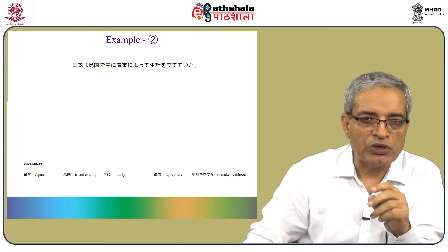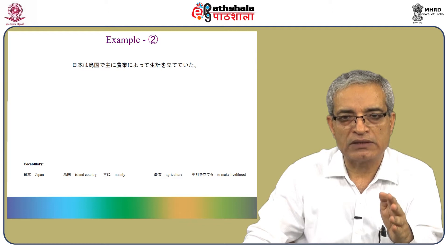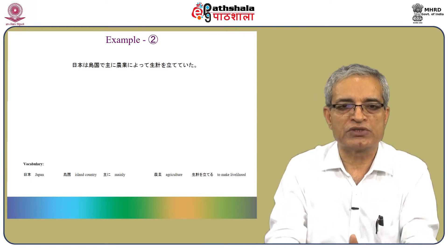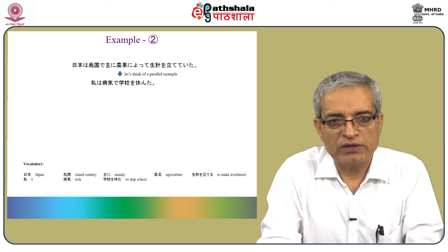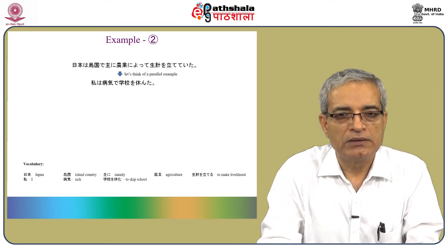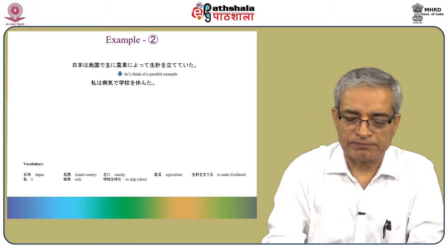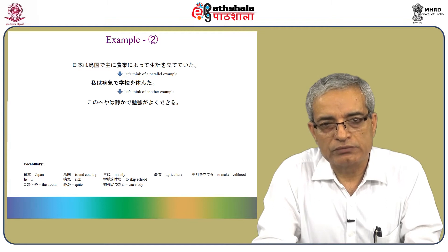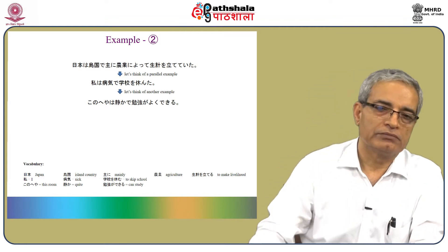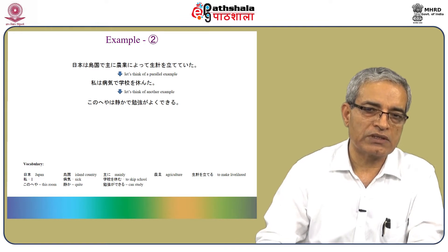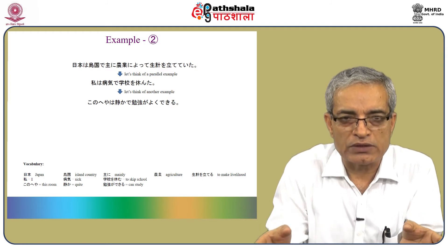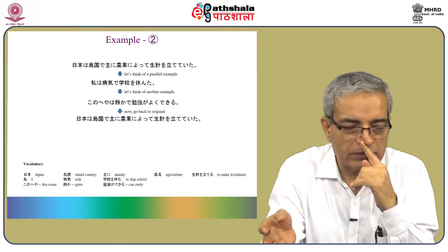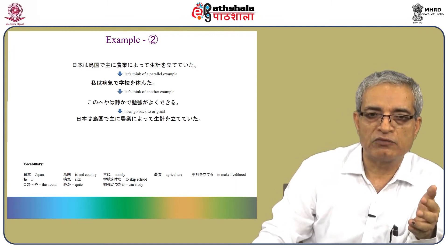The second example is: 'Nihon wa shima go ni de, omoni nogyo ni otte, seikeo otte.' It appears a bit difficult. A simpler parallel example: 'Watashi wa byoki de, gakko wo yasumimashita.' This is fine. There are various ways to connect two clauses — here they are connected by de. There must be a reason why it is not connected by kara — let's see what comes out of it.